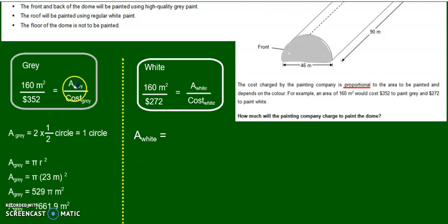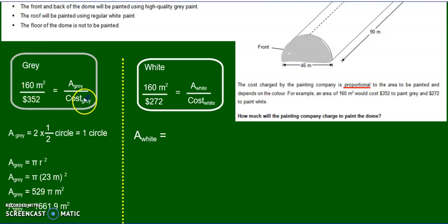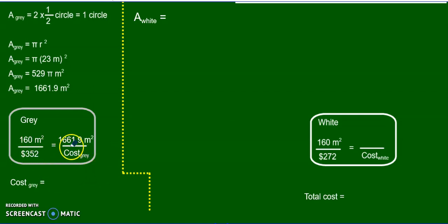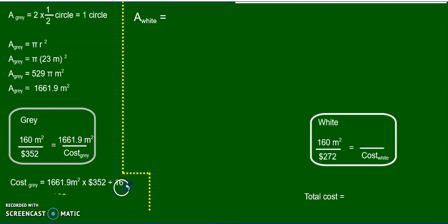Now that we know the area of the grey part, I can put it into the proportion. Meters squared on top, cost on the bottom. Cross multiply and divide — and I get the cost of the grey is going to be $3,656.18.